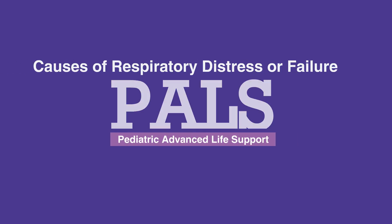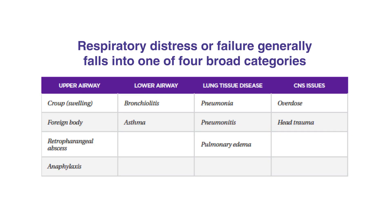Welcome to the lesson on causes of respiratory distress or failure. In this video, we'll discuss the causes of respiratory distress or failure. Respiratory distress or failure generally falls into one of four broad categories, including upper airway, lower airway, lung tissue disease, and central nervous system or CNS issues.